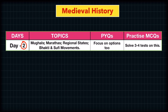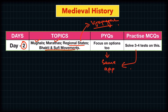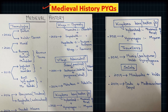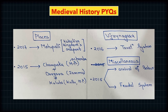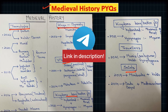On Day 4, cover the Mughals, Marathas, Regional States, and Bhakti and Sufi movements. In regional states, focus especially on the Vijayanagar Empire as it is a very important area with many questions. Keep the same approach for PYQs and MCQs. I have made a topic-wise and year-wise chart for medieval history over the last 10 years — you can take a screenshot or download it from Telegram.